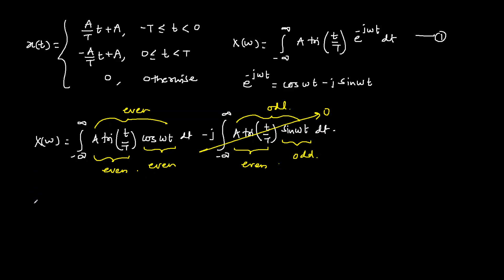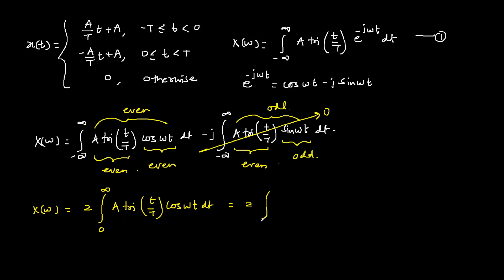The first part can be written as twice the integration of the triangular pulse from 0 to infinity. From 0 to T, the triangular pulse is (−A/T)·t + A, so we integrate [(−A/T)·t + A]·cos(ωt) dt from 0 to T.